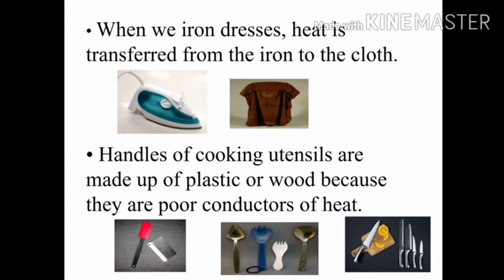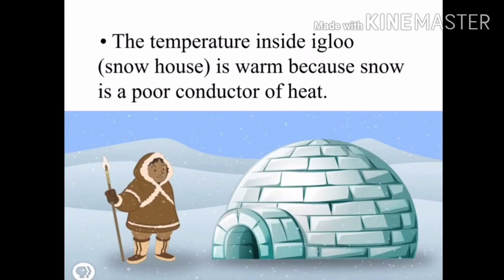Third example: handles of cooking utensils are made up of plastic or wood because they are poor conductors of heat — they are insulators. Fourth: the temperature inside an igloo snow house is warm because snow is a poor conductor of heat.